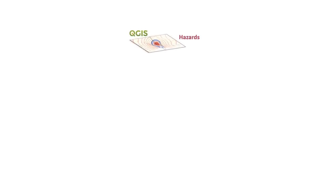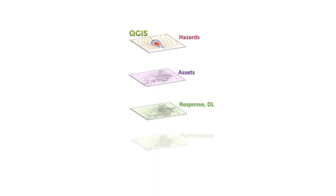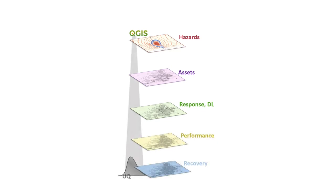Using R2D, researchers can simulate hazard scenarios, intensity measures at the location of each asset, the response and damage and loss modeling of each asset, performance assessment of system infrastructures, the recovery process, and uncertainty quantification.